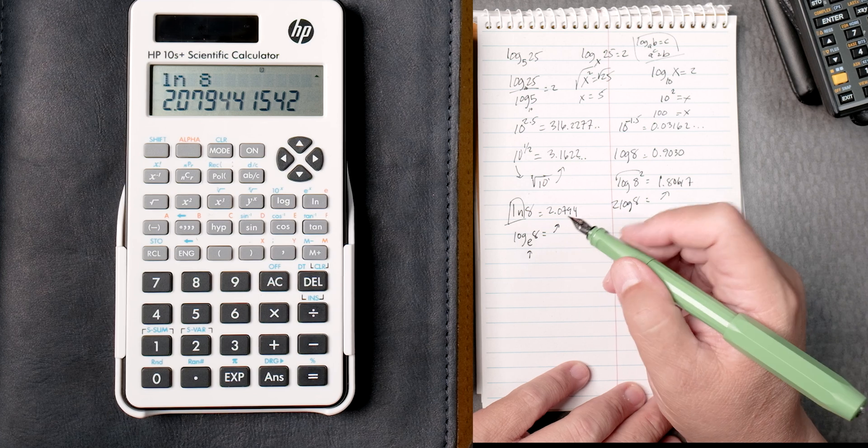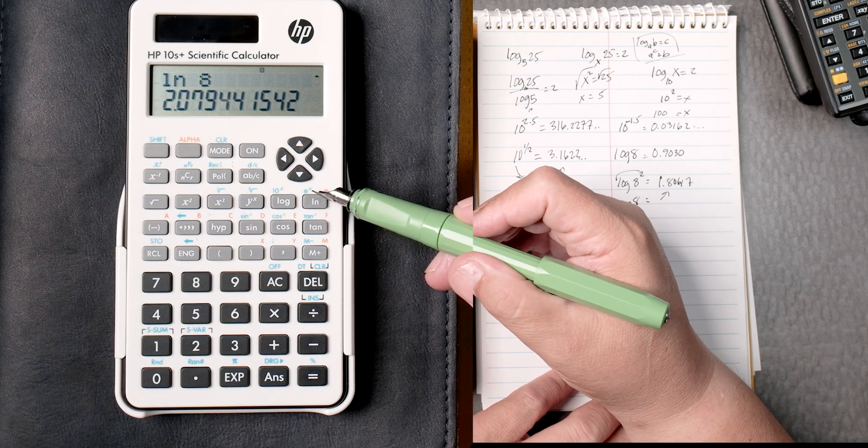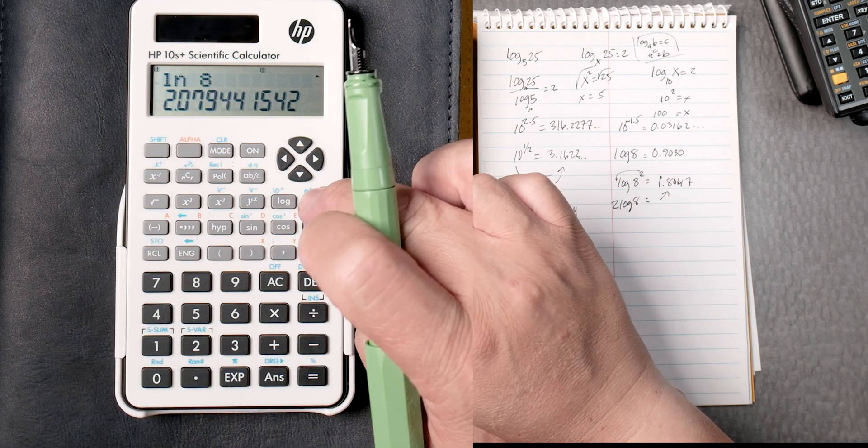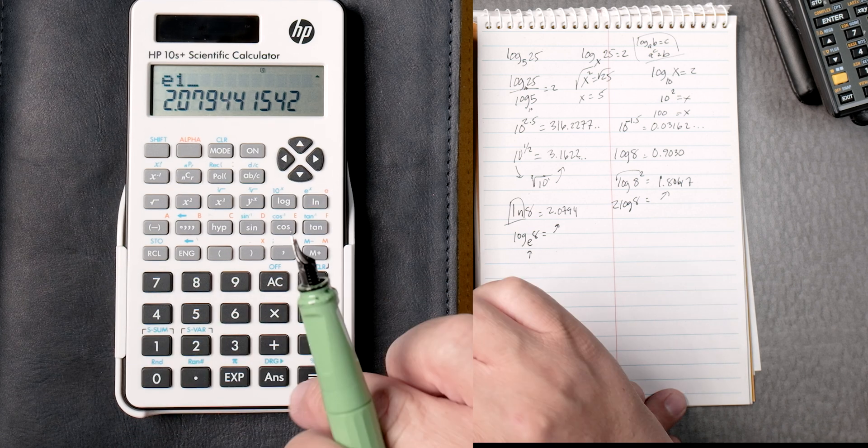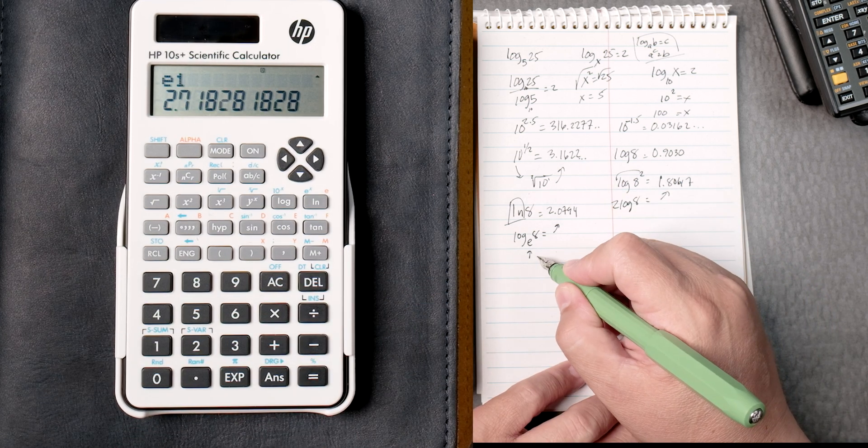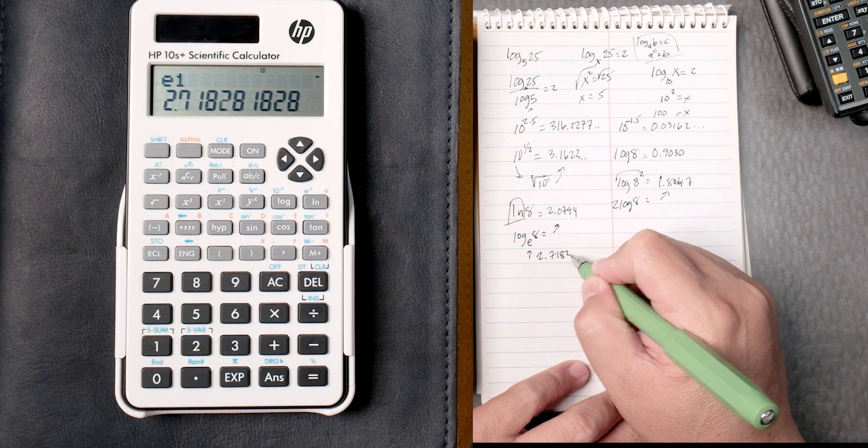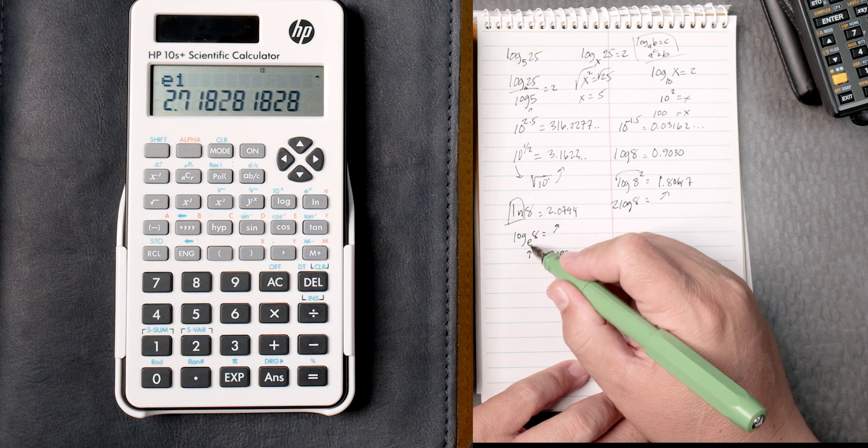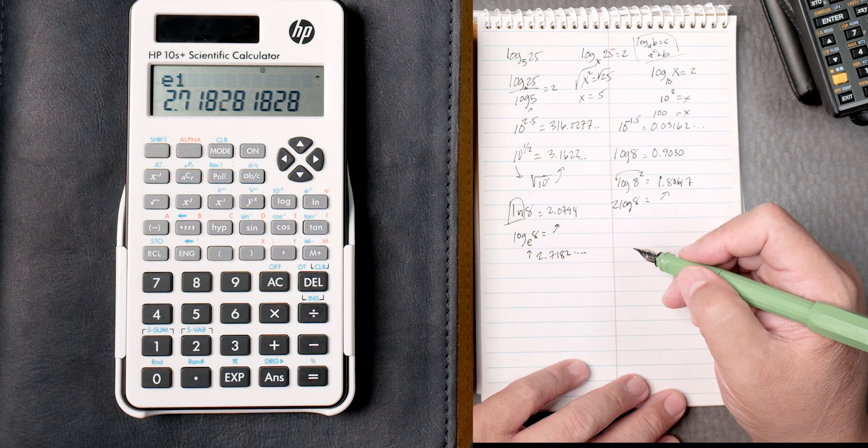E, by the way, is over here. So if you say shift E to the X, you type in 1. That gives you 2.7182 and so on. E is that value.